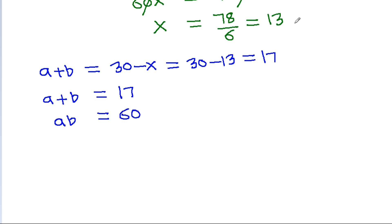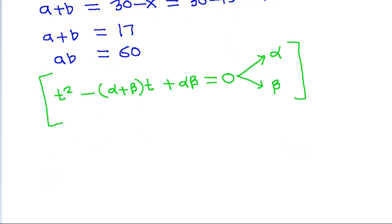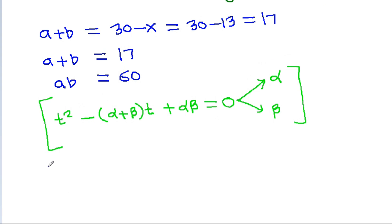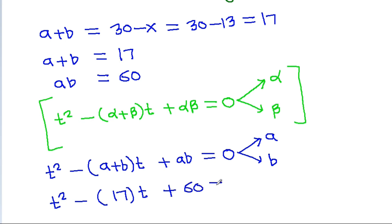For a quadratic equation T squared minus (alpha plus beta) times T plus alpha times beta equals 0, the roots are alpha and beta. So for our equation, T squared minus (A plus B) times T plus AB equals 0, the roots will be A and B. That gives T squared minus 17T plus 60 equals 0.